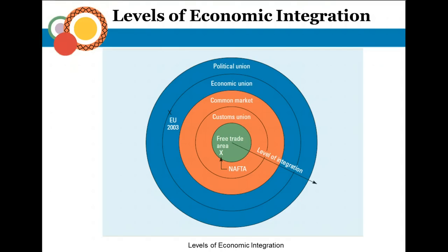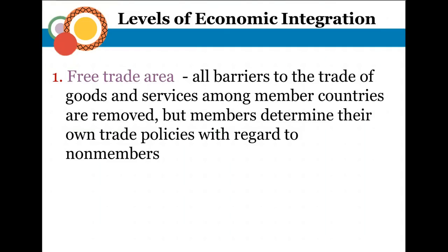Here are the levels of integration from the free trade area, which would be the least integrated, to a political union, which would be the most integrated. A free trade area is something we have with Mexico and Canada, and this is going to eliminate all the barriers for trade among the countries involved — no tariffs, quotas, subsidies, or administrative impediments.